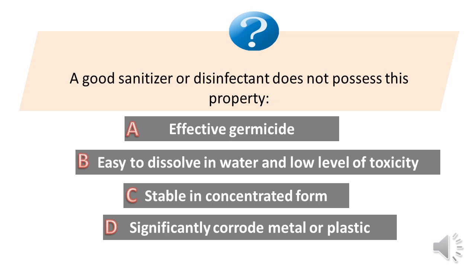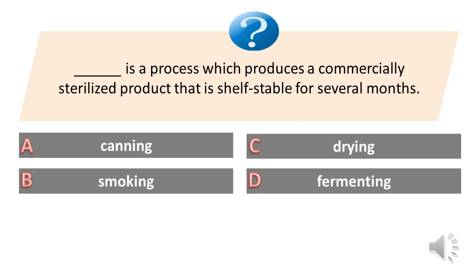It is a process which produces a commercially sterilized product that is shelf stable for several months. A. Canning. B. Smoking. C. Drying. D. Fermenting. Answer is A. Canning.